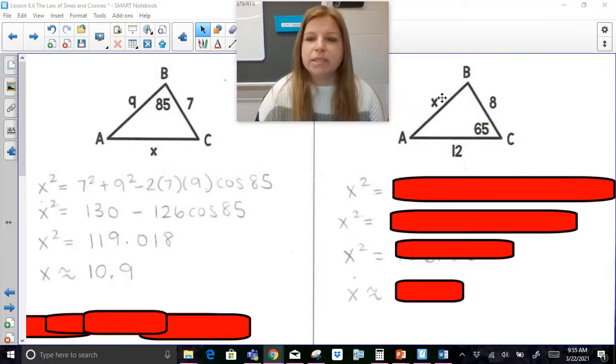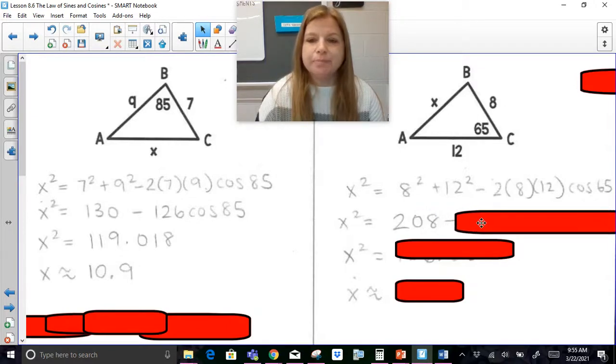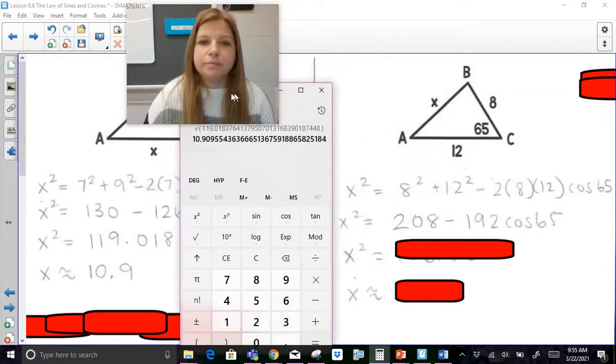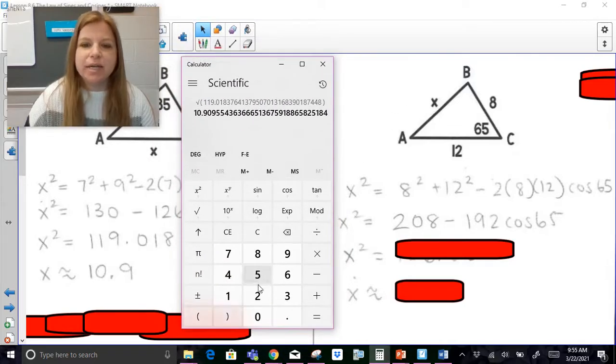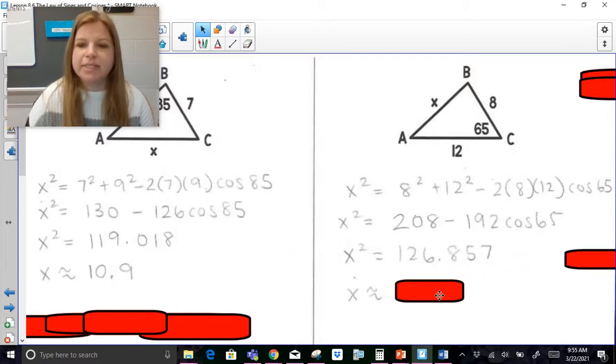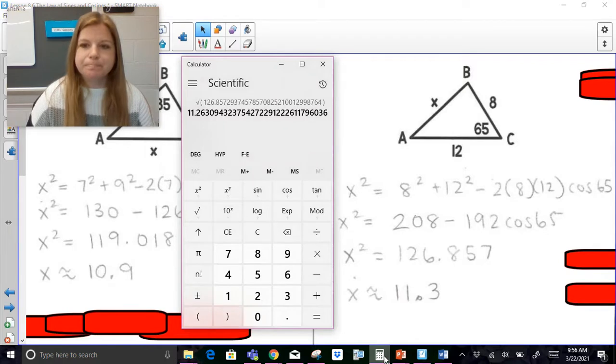Another example here, I need to solve for this side x. So this side squared is equal to the sum of the other two sides squared, minus 2 times 8 and 12, times cosine of 65. So now 8 squared is 64, 12 squared is 144, add them up I get 208. 2 times 8 is 16, times 12 is 192, cosine of 65. So now let's type this in. So now this would be 208 minus 192 times 65 cosine, enter. I get 126.857, take the square root, and I get 11.3 rounded to the tenths place. Awesome.